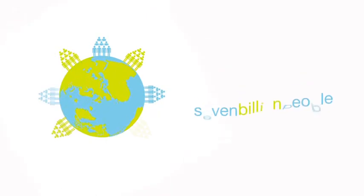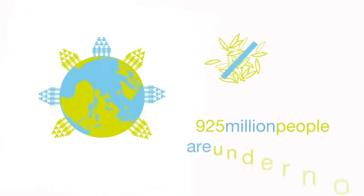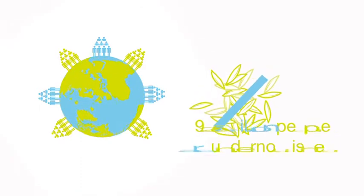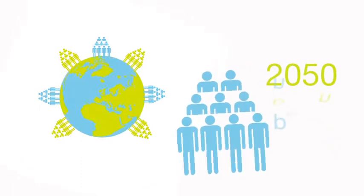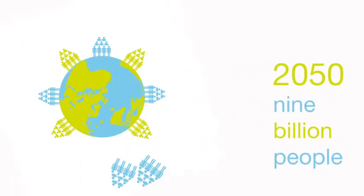Look, today there are 7 billion people on Earth. 925 million people are undernourished. In 2050, there will be 9 billion people.